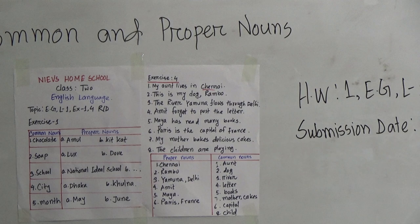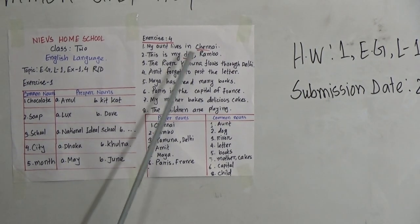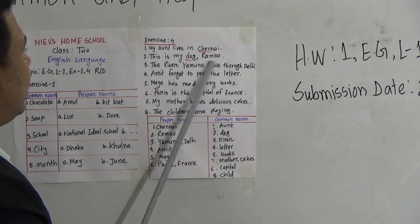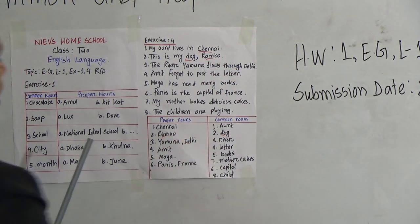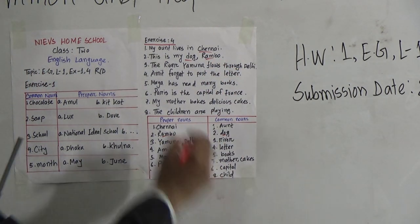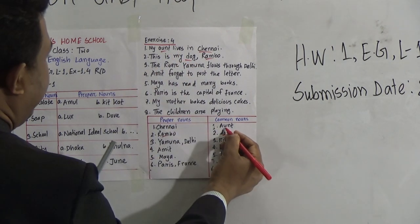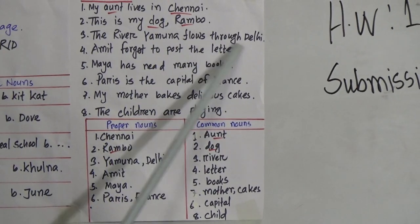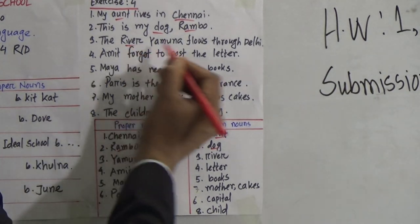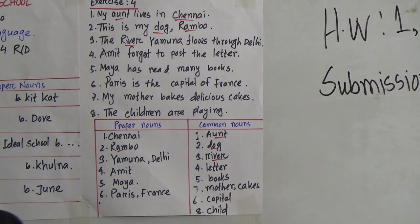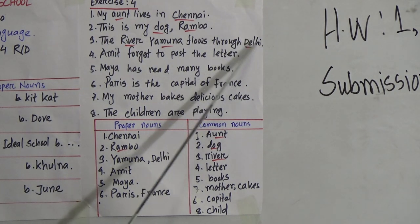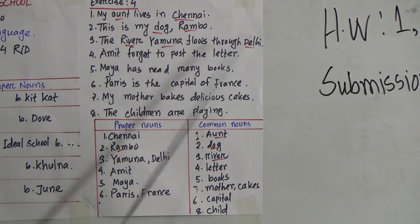Number two: This is my dog, Rambo. Dog means all the dogs, so dog would be a common noun. And Rambo — Rambo is a special name, so it would be a proper noun. And aunt — aunt means all aunts, so it would be a common noun. Number three: The river Yamuna flows through Delhi. River means all the rivers, so it would be a common noun. And Yamuna and Delhi — Yamuna is the name of a river, so it's a special name. And Delhi also is the name of a province of India, so it would also be a proper noun.